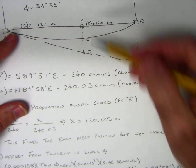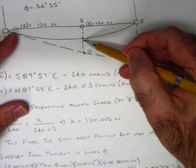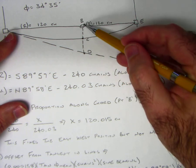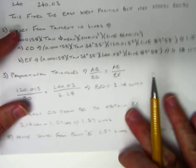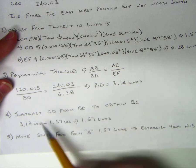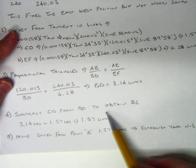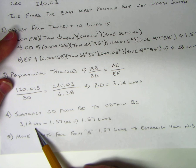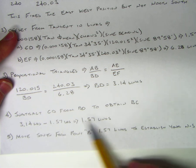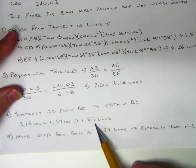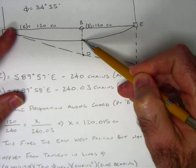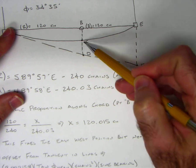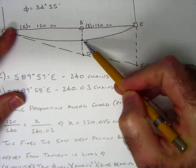Let's look at the figure again. We've solved for DC and DB, so what we need is BC. Subtract CD from BD to obtain BC: 3.14 links minus 1.57 links equals 1.57 links. Move from point B south 1.57 links, and that will establish the lost corner at point C.